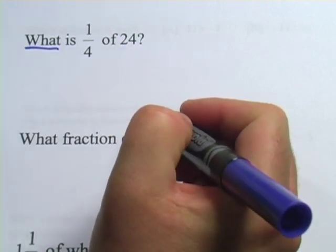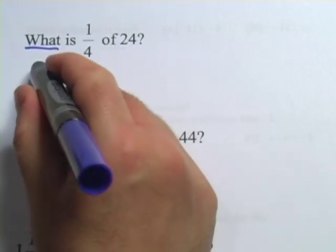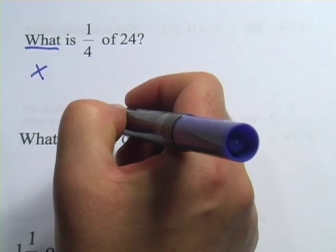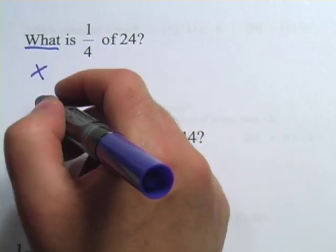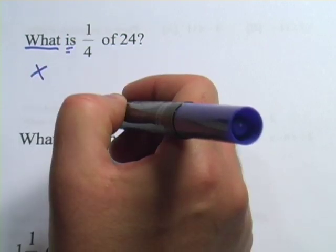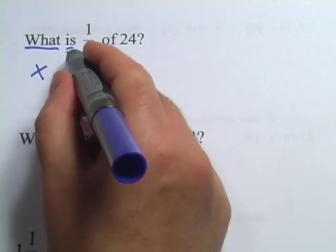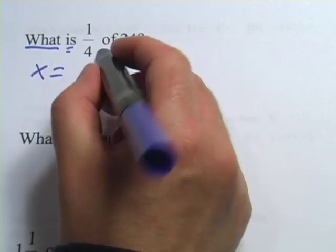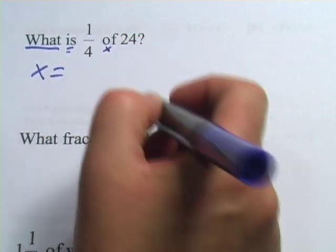You should look for a phrase that has 'what' in it and that's usually going to be the variable X. It might say what number, what fraction, or just plain what like this one says. The 'is' in the problem is usually going to be the equal sign in the equation, and then the other important thing is that 'of' is multiplication.